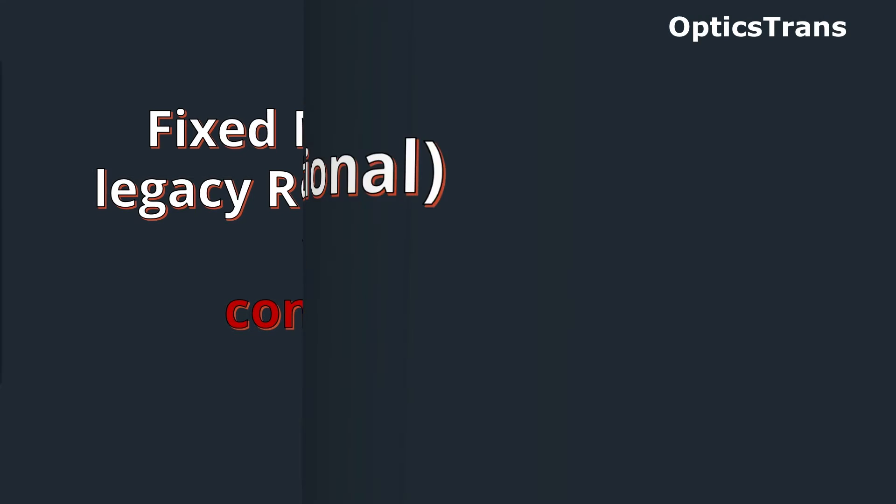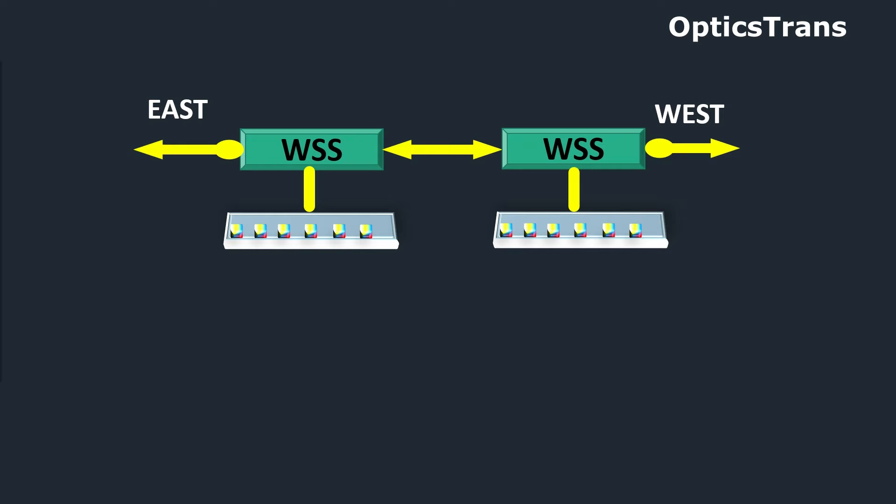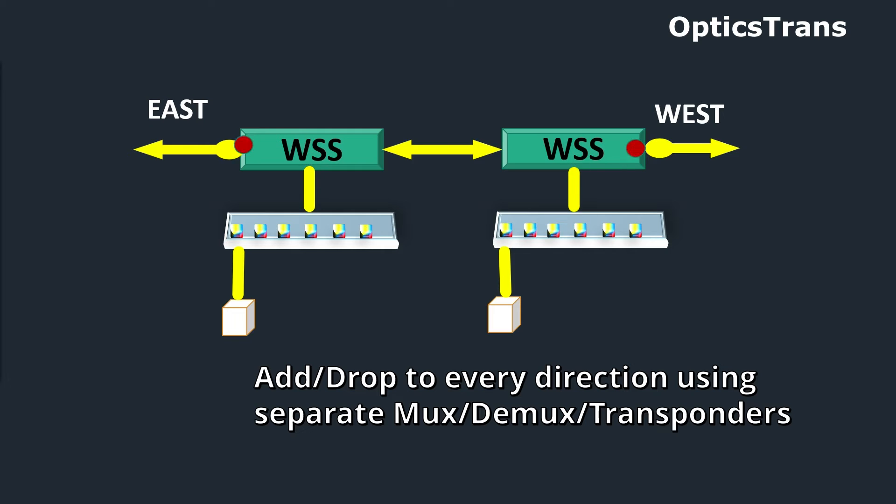This site having east and west direction, let's assume we want to insert a red wavelength in the east direction and one in the west direction. This is possible using a legacy ROADM, where one transponder is connected to the east mux demux and another transponder is connected to the west mux demux. The red wavelength can be added to every direction using separate transponders, and these wavelengths can be kept physically separate, so we can easily add drop same wavelength on same site.